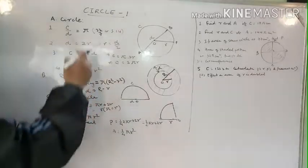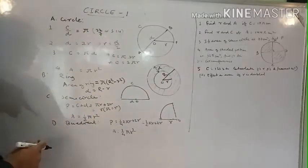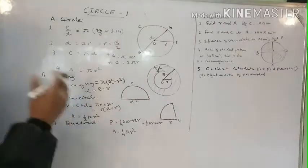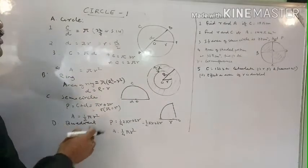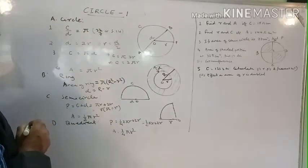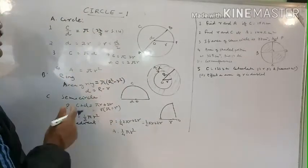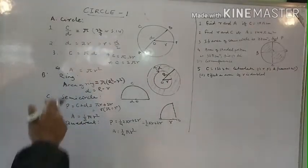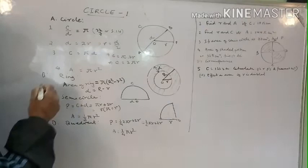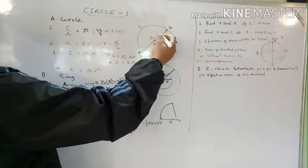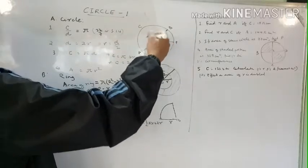In a question, if the value of pi is given, then you take that value. If the value of pi is not given, you always take 22/7. Normally the value of pi is given in the question; if not, take 22/7. From the diagram, you can see diameter equals radius plus radius.